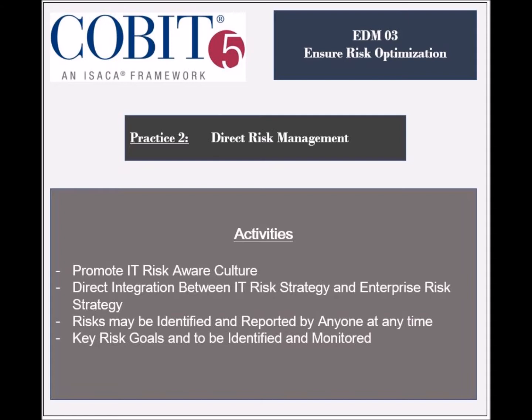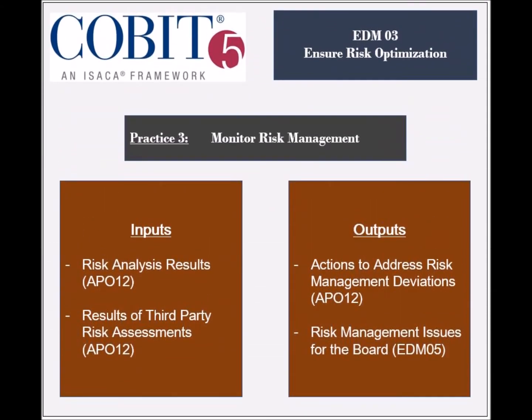Key risk indicators should be monitored, and measured information should be reported. The third practice, Monitor Risk Management, receives several inputs which include the Risk Analysis Results, and the Results of Third-Party Risk Assessments from the APO-12 process. The process produces two outputs: the Remedial Actions to Address Risk Management Deviations used by the APO-12 process, and the Risk Management Issues for the Board.